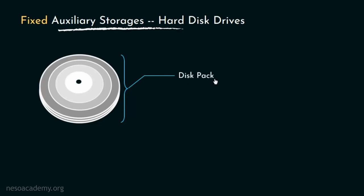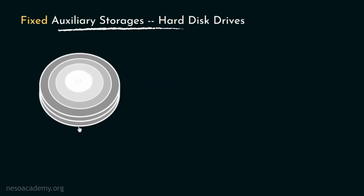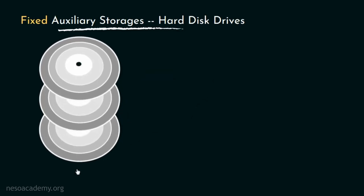As Captain America himself illustrated, this is a collection of multiple platters or magnetic disks which are put one over another. Specifically in this case, we have three platters. As you can see, the surfaces of each of these platters are divided into concentric circles, which are called the tracks.